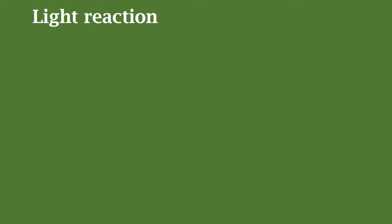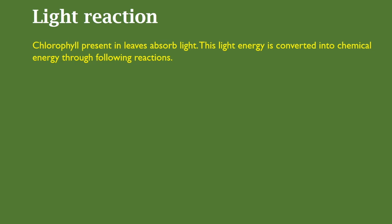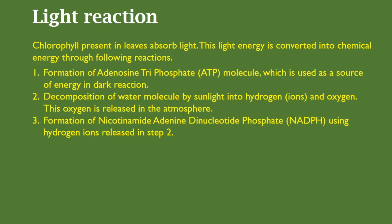Let's understand what exactly happens in the light reaction. Chlorophyll present in leaves absorbs light, and this light energy is converted into chemical energy through the following reactions: first, formation of the adenosine triphosphate (ATP) molecule, which is used as a source of energy in the dark reaction; second, decomposition of the water molecule by sunlight into hydrogen ions and oxygen, with this oxygen released into the atmosphere; third, formation of nicotinamide adenine dinucleotide phosphate (NADPH) using the hydrogen ions released in step 2.